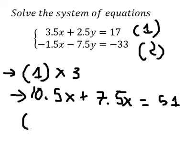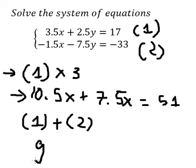Now we need to add equation one plus equation two. So 10.5 minus 1.5, that is about 9x. 7.5 with negative 7.5, they cancel.